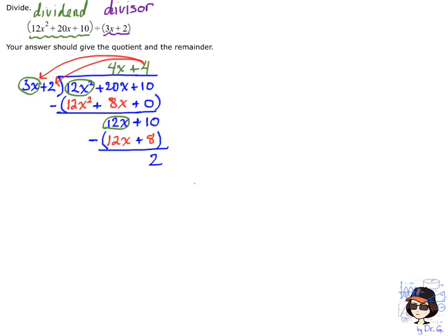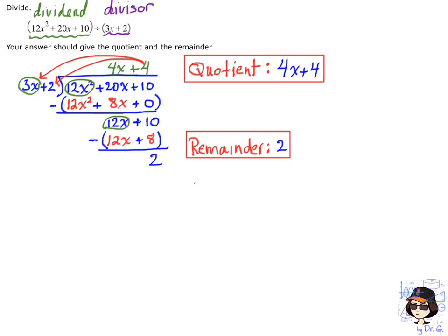So that's it. And my quotient is the thing, the 4x plus 4. So I'm going to write the quotient is 4x plus 4. And then the remainder, the other part of my answer, is just 2. And that's it.